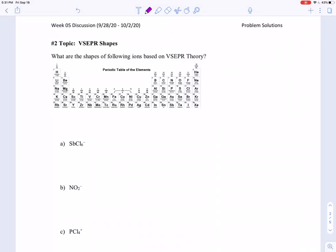Okay, so this is a second problem, and I'm going to solve it in two parts. So this is the first part, the VSEPR shapes.